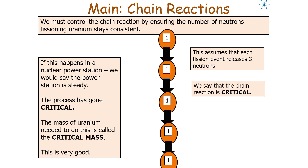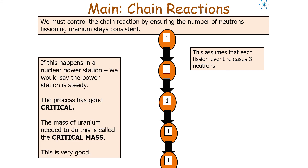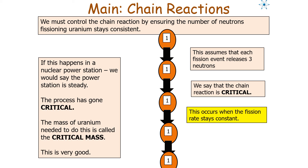To control the chain reaction, we try to ensure the number of neutrons fissioning uranium stays consistent. If each fission event releases three neutrons, we can stop two out of three from causing further fission — going from one event to one to one to one. In a nuclear power station, this means the station produces power at a steady rate. We say the process has gone critical; the mass of uranium needed to do this is called the critical mass. A critical chain reaction occurs when the fission rate stays constant, achieved by placing control rods partially into the reaction chamber.